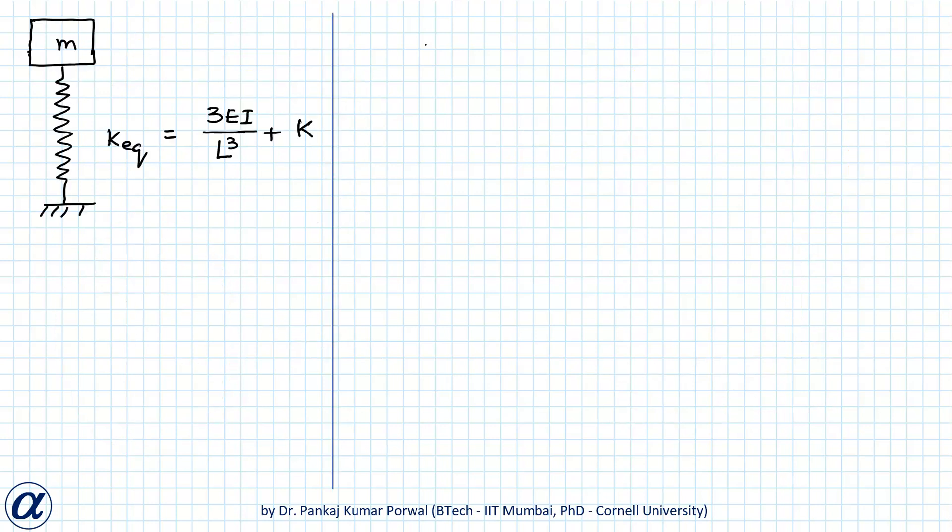Now the equation of motion for a vibrating system consisting of mass and spring is MẌ plus K. In this case, we will have to write K equivalent X equals zero, or MẌ plus 3EI upon L cube plus K times X equals zero. So this is our equation of motion for the system.